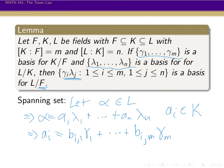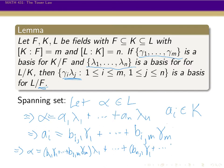But then each aᵢ is inside K, so to write the aᵢ's we can use γ₁ through γₘ. We can write aᵢ equal to bᵢ₁γ₁ plus ... plus bᵢₘγₘ. That means we can write α as (b₁₁γ₁ + ... + b₁ₘγₘ)λ₁ all the way down to (bₙ₁γ₁ + ... + bₙₘγₘ)λₙ. Then we expand that all out.